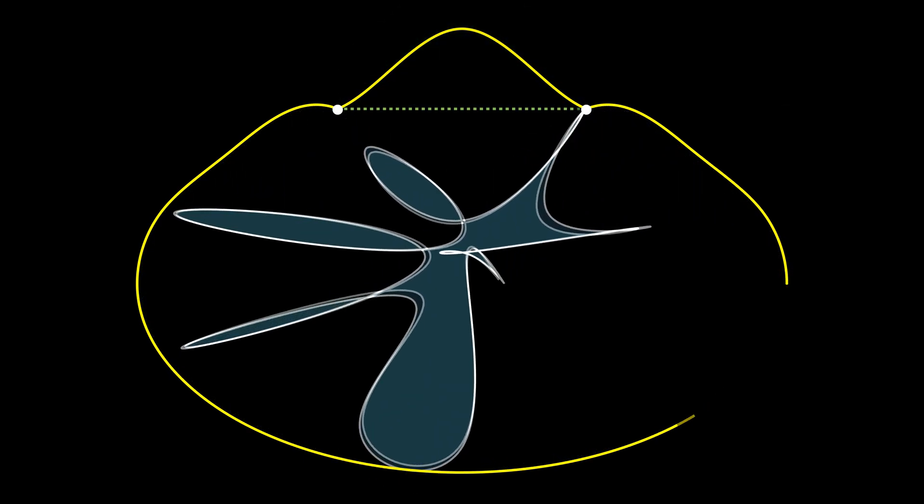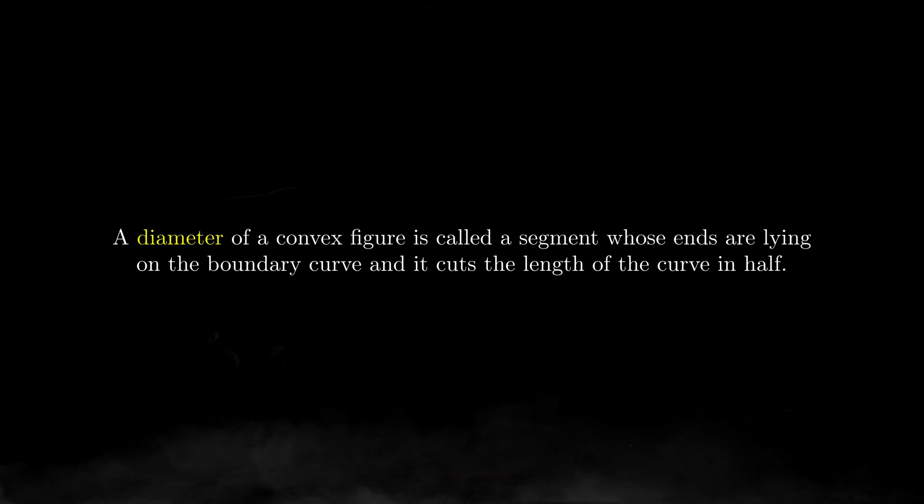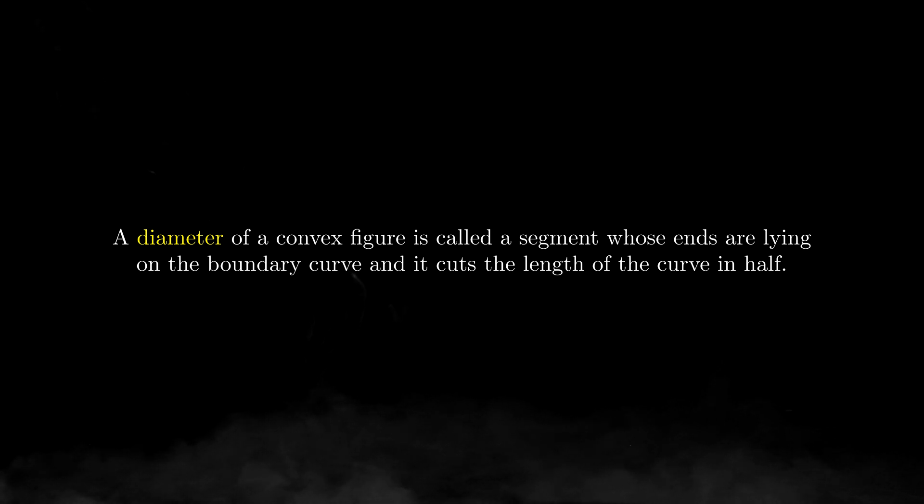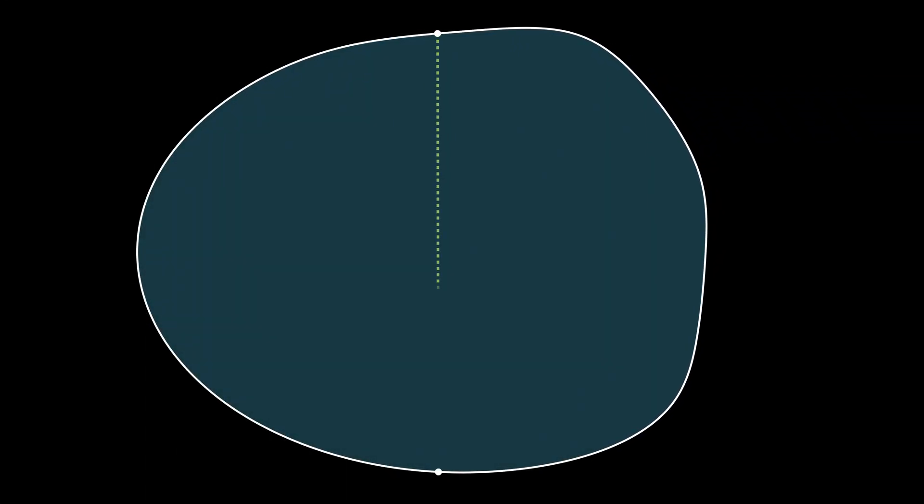The second question is harder, and as usual, let's touch on the definition first. A diameter of a convex figure is called a segment whose ends align on the boundary curve, and it cuts the length of the curve in half.